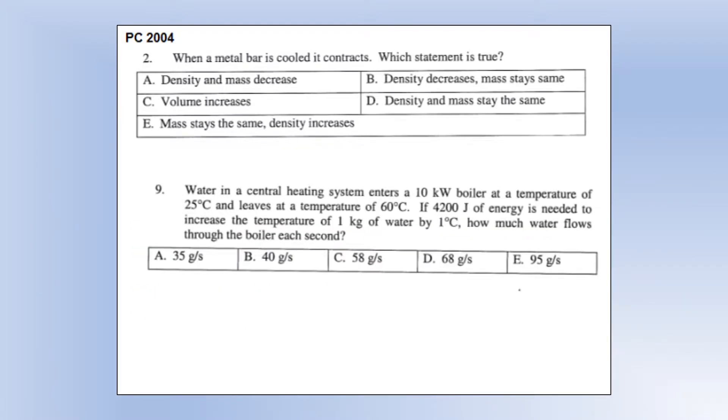When a metal bar is cooled, it contracts. Which statement is true? Density and mass decreases. No, mass is not affected by heating something. Its volume, or size, can change, and therefore its density can change, but mass is not affected. So A is not correct. B says mass stays the same, which looks good. Density decreases. No, that's what happens when you heat an object, its density decreases. If you cool it, its density increases.